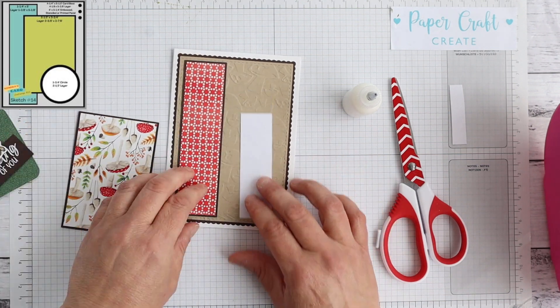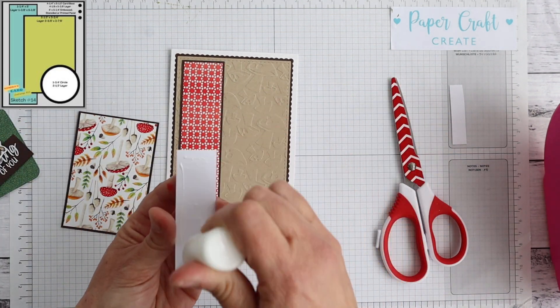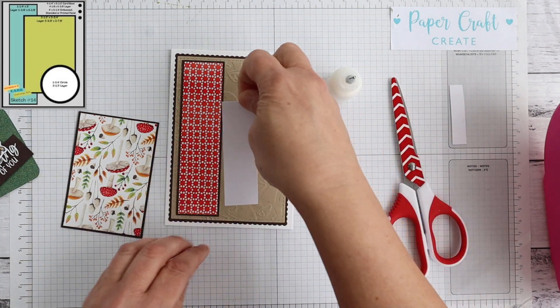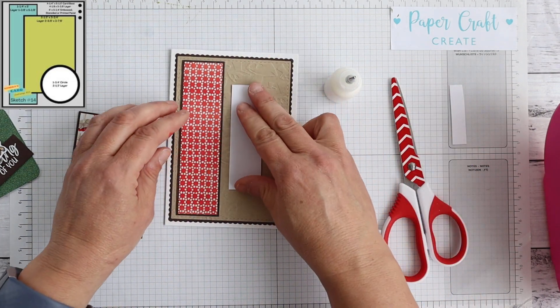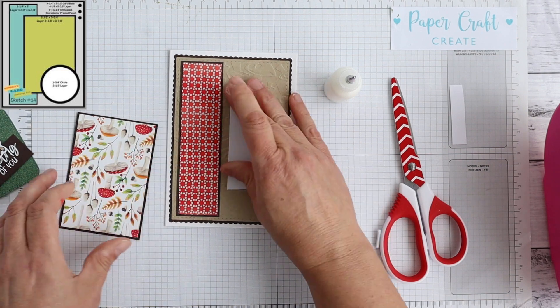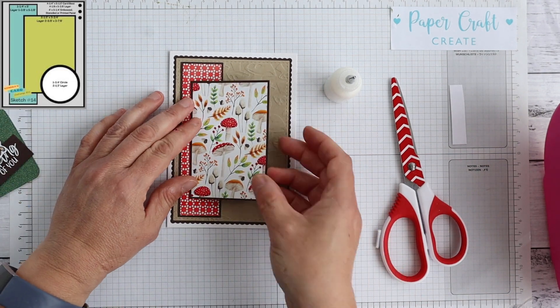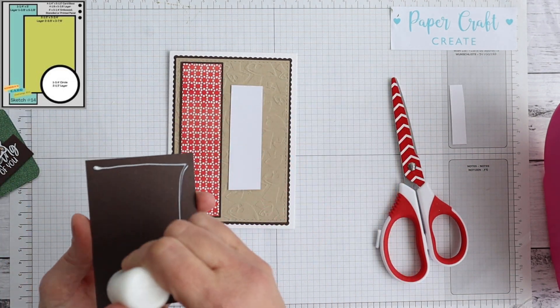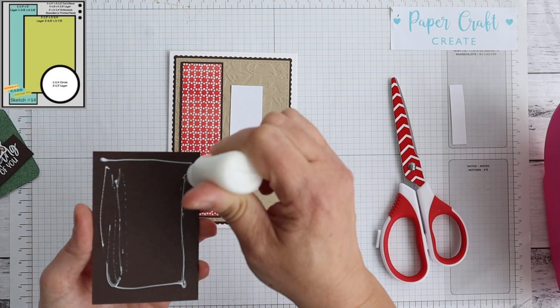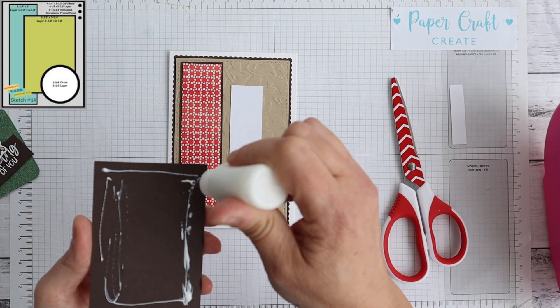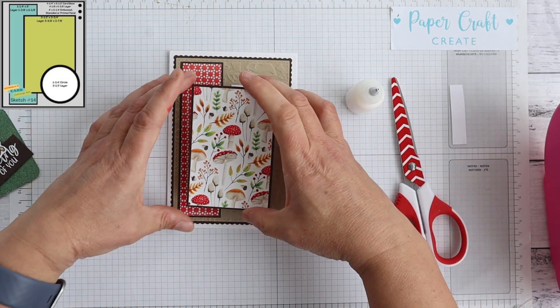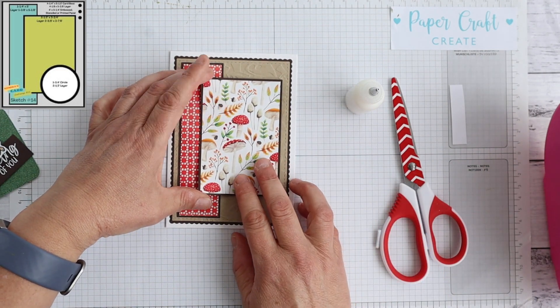Now just to make it a little bit more interesting what I have done is I've used some layering scalloped rectangle dies as well as a stitched border die just to add a little bit more interest to the card rather than just cutting straight layers. But they are the sizes that suit this card here.